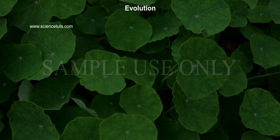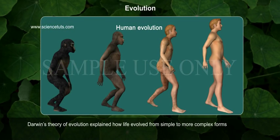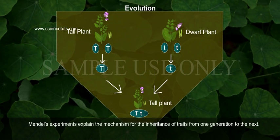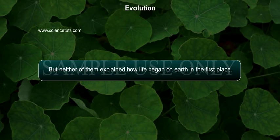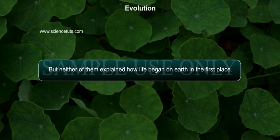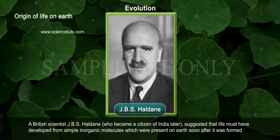Darwin's theory of evolution explains how life evolved from simple to more complex forms. Mendel's experiments explained the mechanism for the inheritance of traits from one generation to the next. But neither of them explained how life began on earth in the first place.